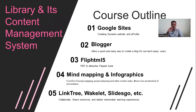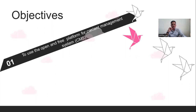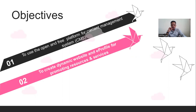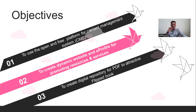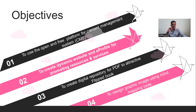Today we are going to see a few tools: the content management system, first Google Sites — using Google Sites you can create a dynamic website, e-profile, and a blog — and Flip HTML5, a mind mapping tool, infographics, Link Tree, Waglet, and Slide Score. The main objective is to use open and free platforms for content management systems to create a dynamic website and e-profile for promoting resources and services, and to create a digital repository for PDFs as attractive flip books, and to design graphic images using mind mapping and infographic tools.